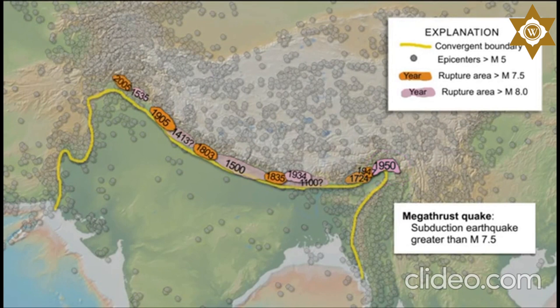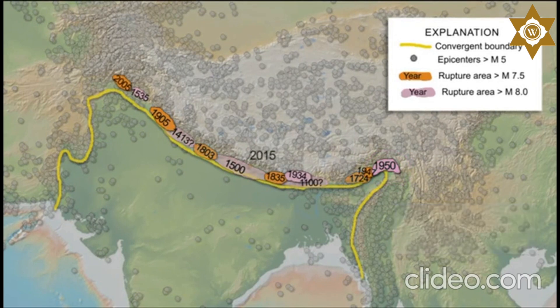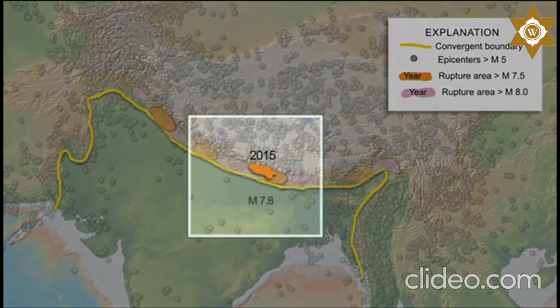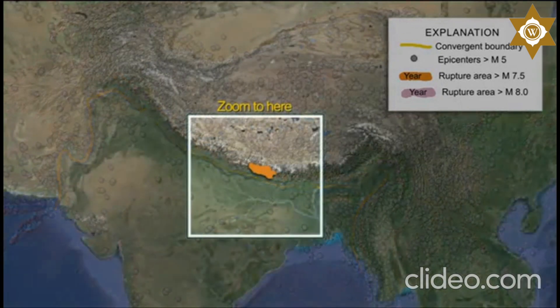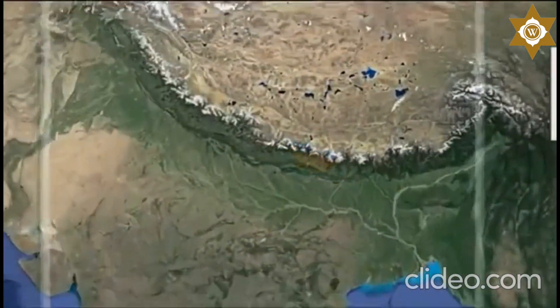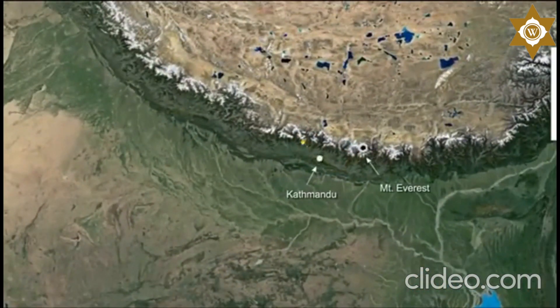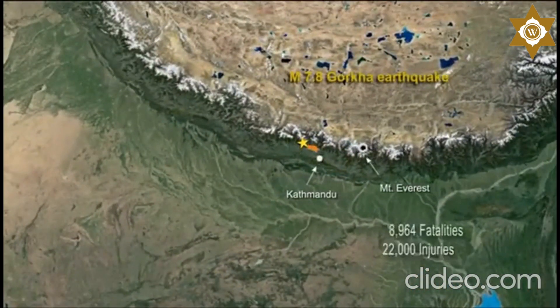On April 25, 2015, the magnitude 7.8 Gorkha earthquake started 15 kilometers beneath the epicenter northwest of the Nepal capital of Kathmandu and ruptured 100 kilometers toward the east.